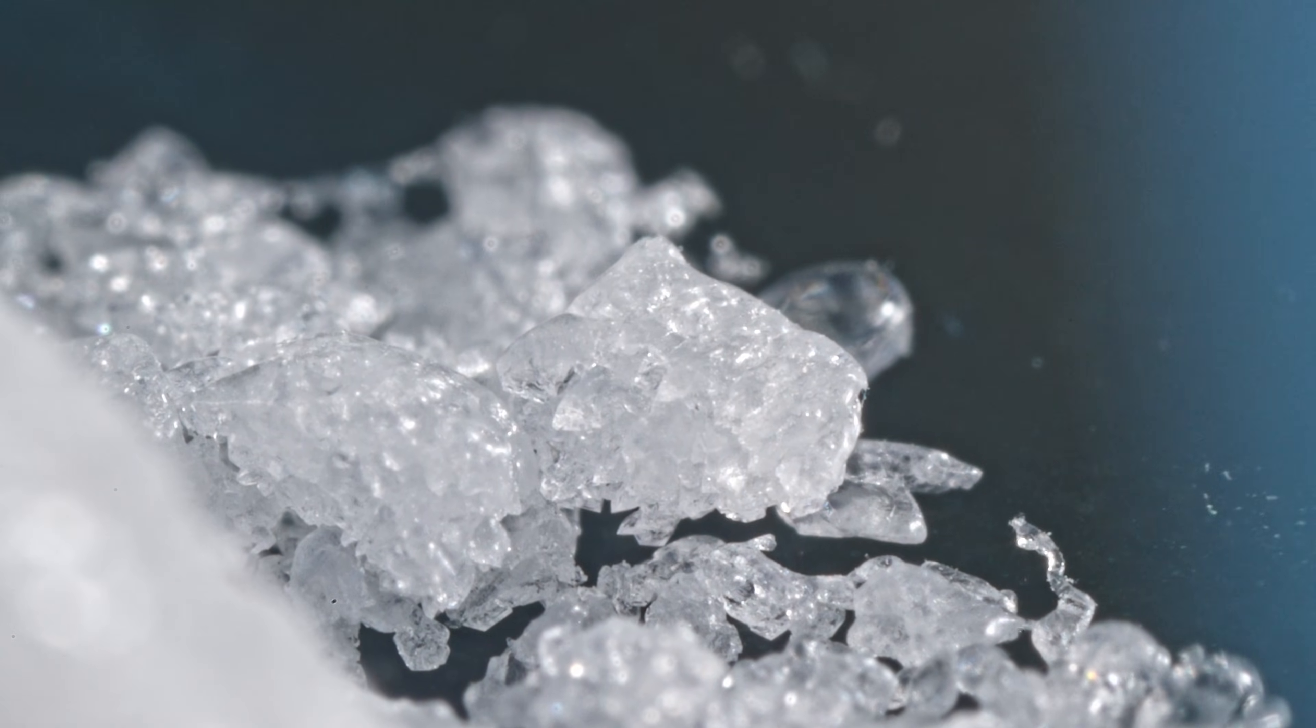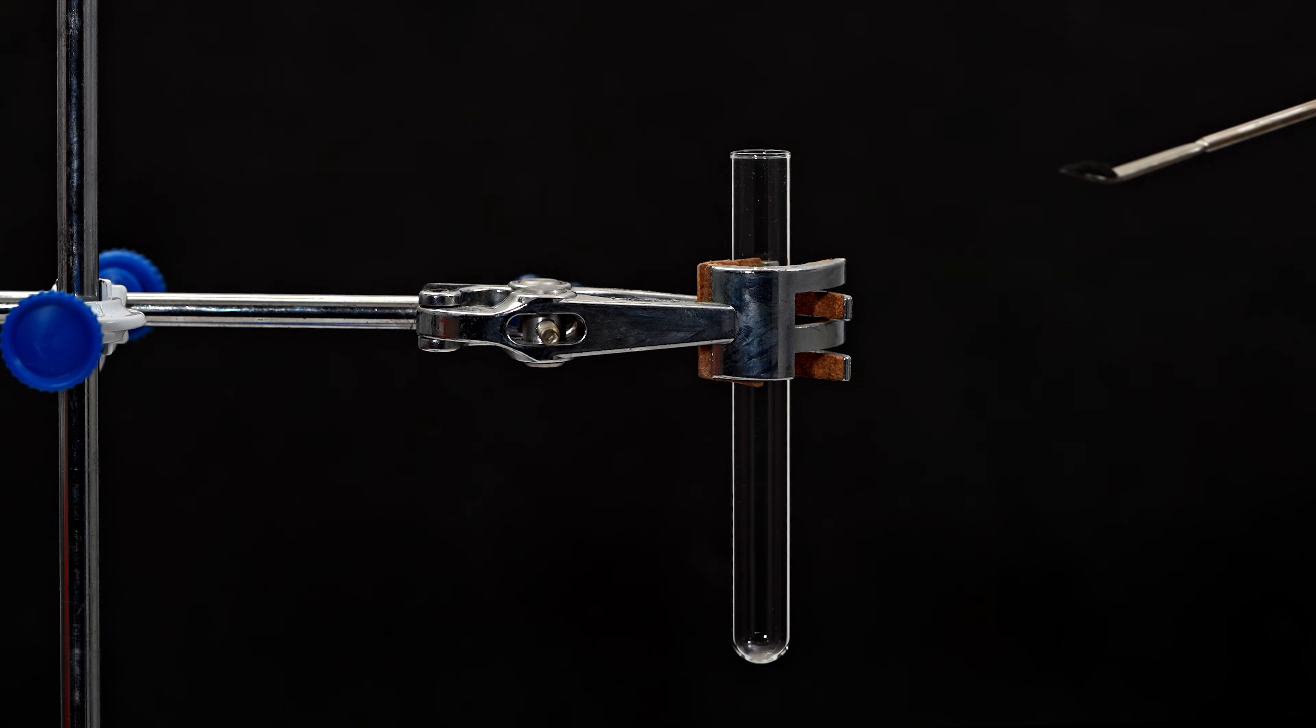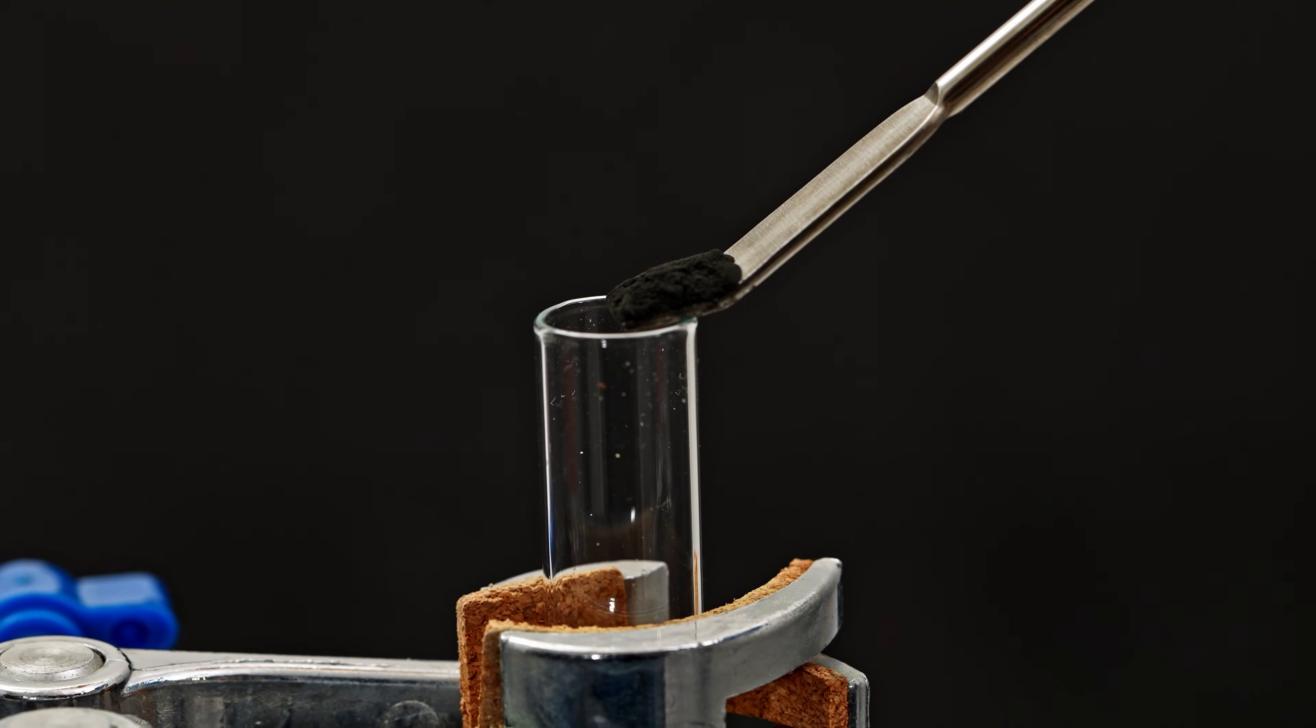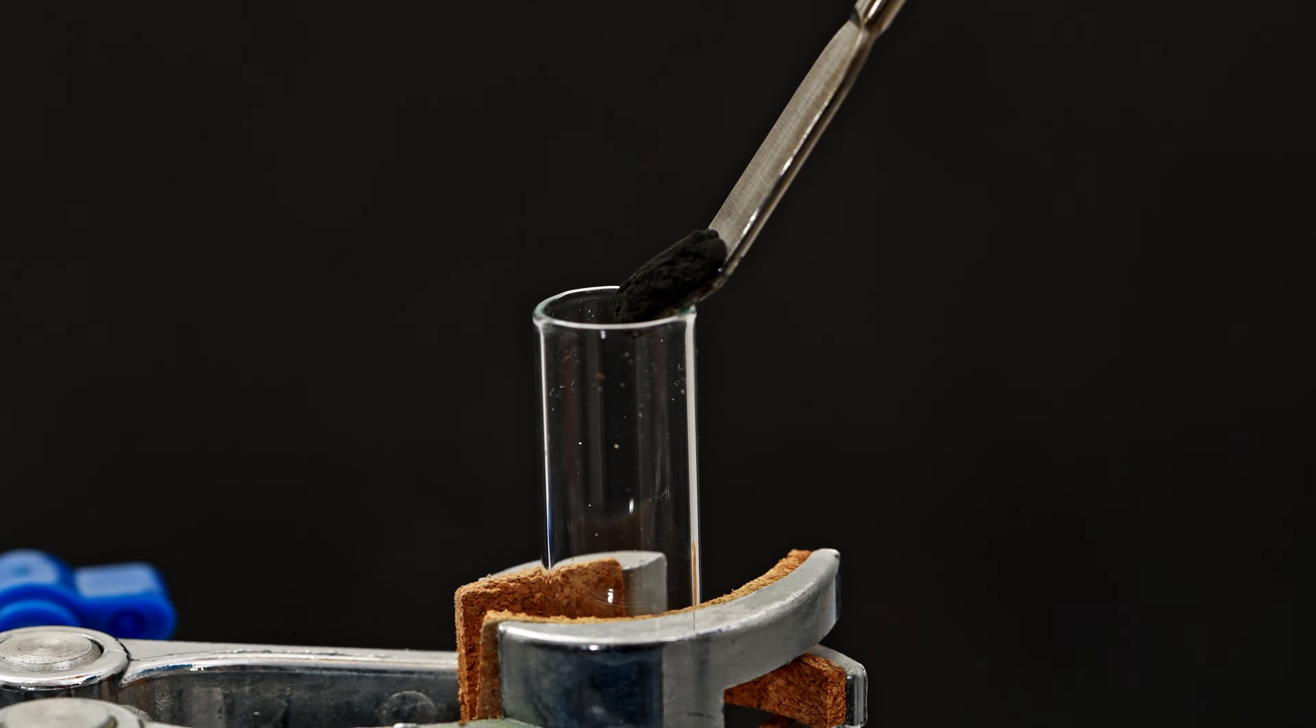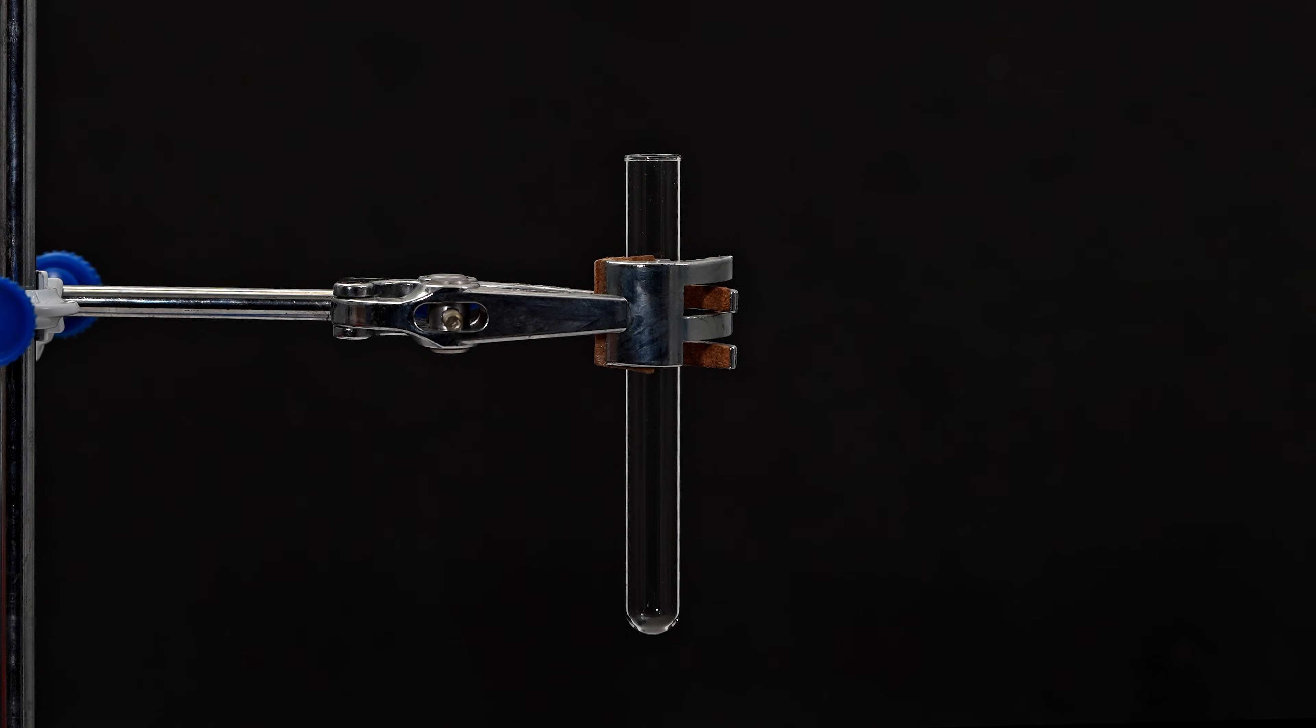Now, let's move on and take a look at how this stuff reacts with chemical elements. For the first reaction, I took some tungsten powder. By itself, this element is quite inert, but what happens when it comes into contact with xenon difluoride? Let's find out.